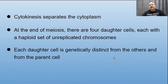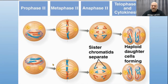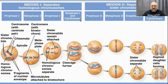At the end of meiosis there are four daughter cells, each with a haploid set of unreplicated chromosomes. Each daughter cell is genetically distinct from the others and from the parent cell because of crossing over, independent assortment, and segregation. We'll specifically talk about those mechanisms coming up. Pause here and draw this out or make sure you thoroughly understand what's happening before you move on.